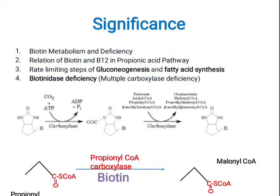When you understand this topic, you will have a better concept of biotin metabolism and deficiency. You will understand the relationship between biotin and B12 better in the propionic acid pathway. You will understand rate-limiting steps, because carboxylases are rate-limiting steps of gluconeogenesis and fatty acid synthesis, and you will see the link between these two pathways through carboxylases.